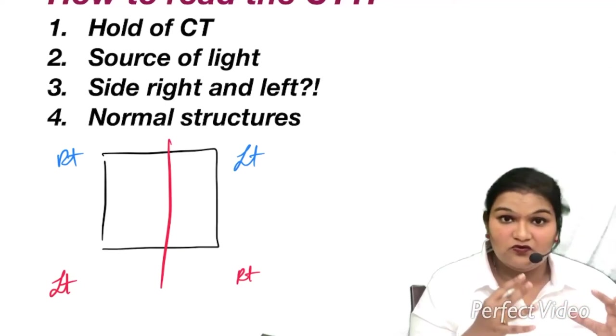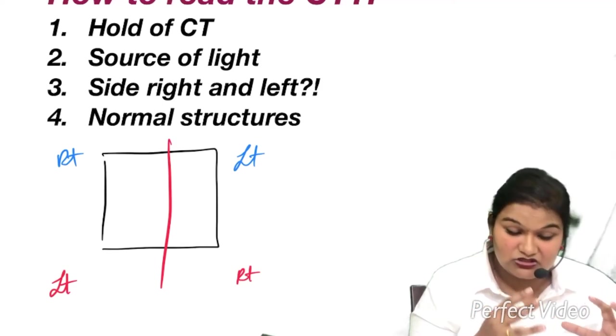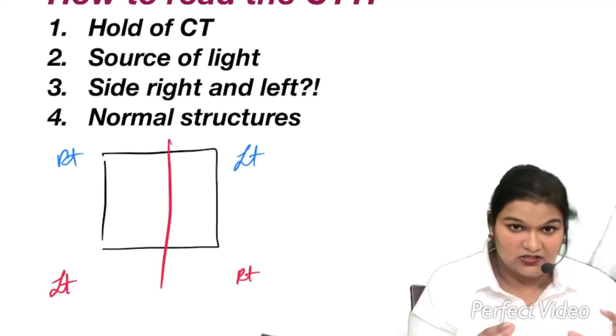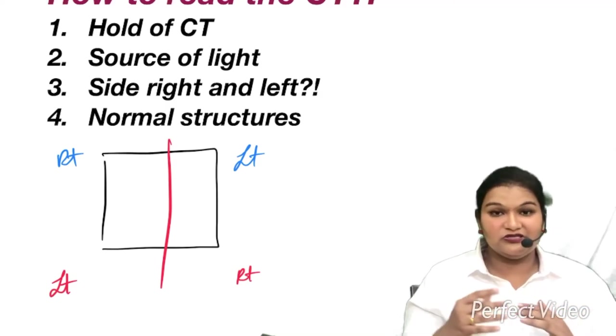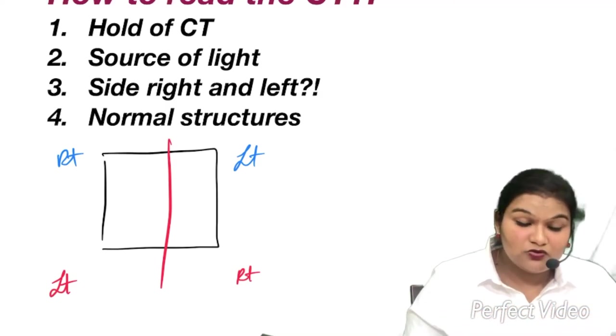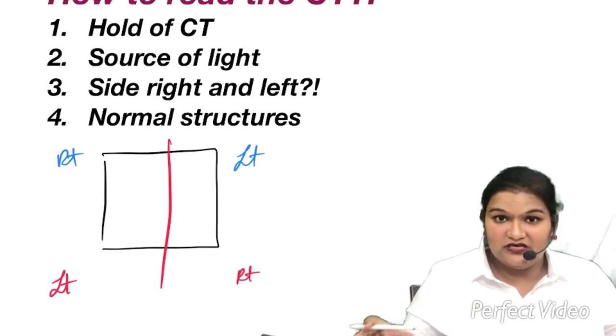Now let us move towards what are the normal structures that appear on the scan. So I have seven different scans at different levels: T2, T3, T4, T5, T6. I'm going to cover those in each of the lectures.